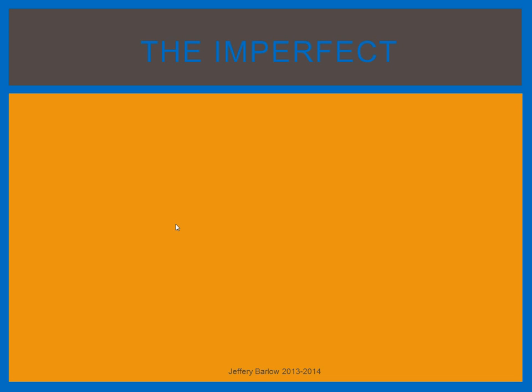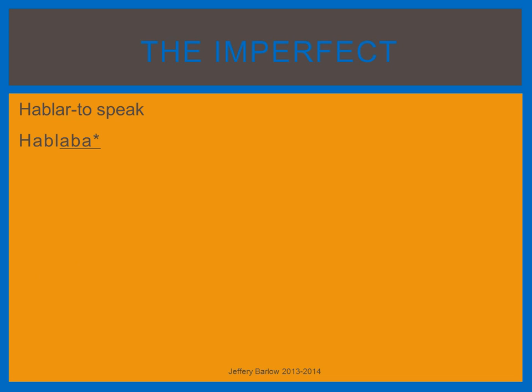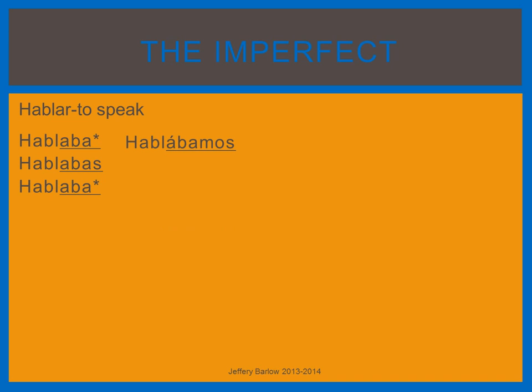The imperfect is a very easy tense to conjugate. Hablar, which is a regular verb in the imperfect tense, is conjugated as follows. The first step is to take off the AR, which leaves you with a stem, and to the stem we add: hablaba, hablabas, hablaba, hablábamos, hablaban.